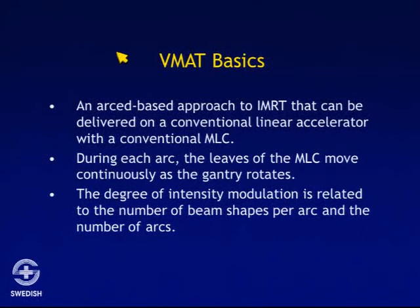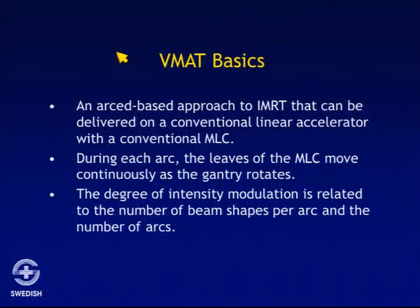The basics of IMAT or VMAT is an arc-based approach to IMRT that can be delivered on a conventional linear accelerator with a conventional multi-leaf collimator. During each arc, the leaves of the MLC move continuously as the gantry rotates. The degree of intensity modulation is related to the number of beam shapes per arc and the number of arcs.